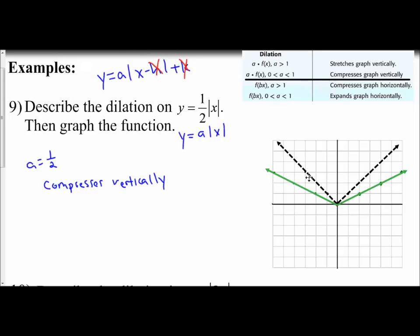We see the graph is compressed vertically—it looks smashed down. That's what compressed vertically means: a slower increase on the graph. That is our dilation of an absolute value where we have an a value. In the next example,